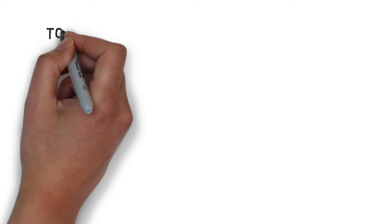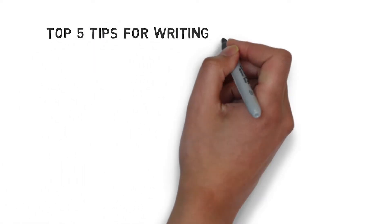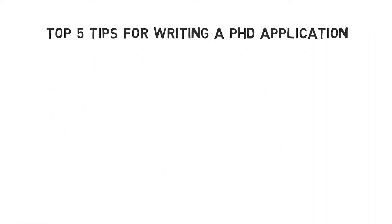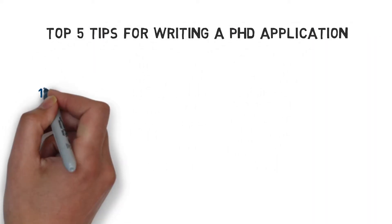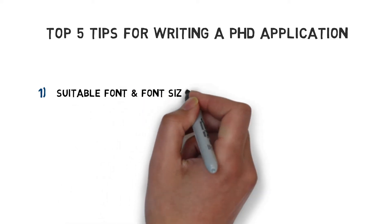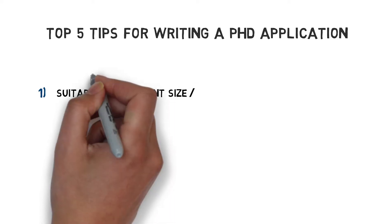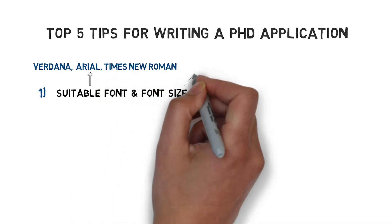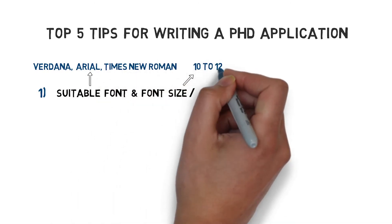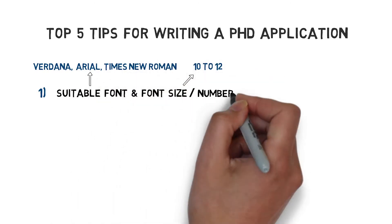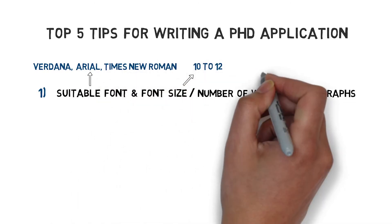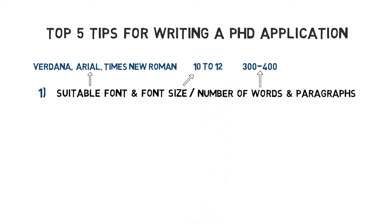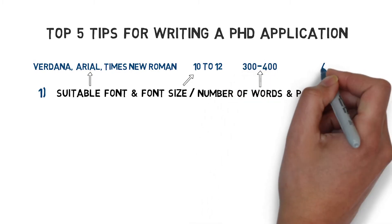Before I get started, let me first emphasize the most important tips for writing a PhD application letter. First off, pick a standard font and font size that is easy to read. For example, Verdana, Arial, or Times New Roman with a 10 to 12 point font size is most suitable. Stick to a word count of around 300 to 400 words on a one-page document and divide your letter into four paragraphs.